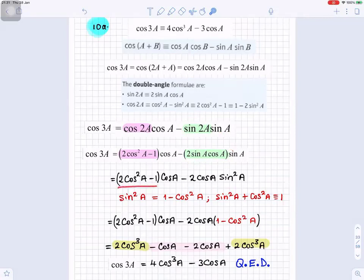So, now we have 2 cos²a minus 1 cosa minus 2 cosa sin²a. Where did this sin²a come from? We multiply sina times sina. That gives us sin²a. But we know sin²a is 1 minus cos²a.